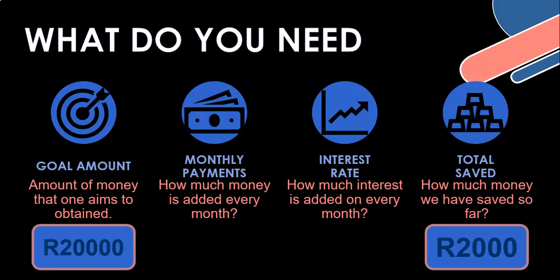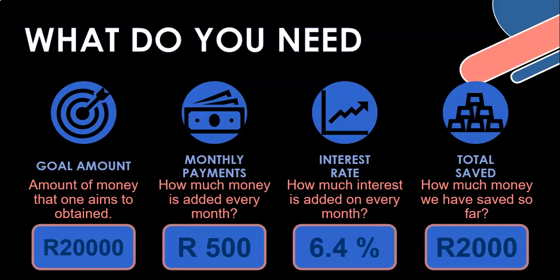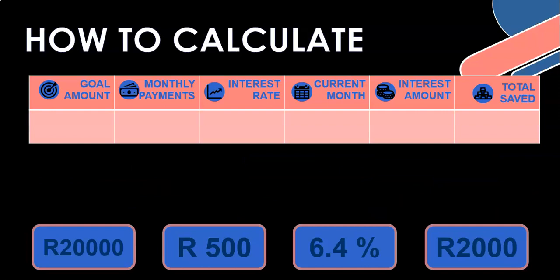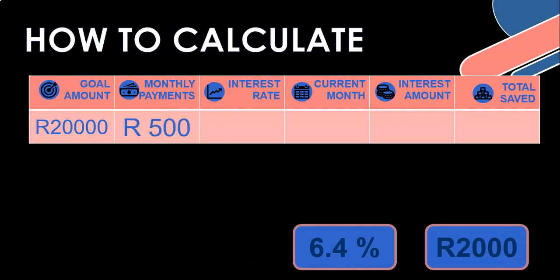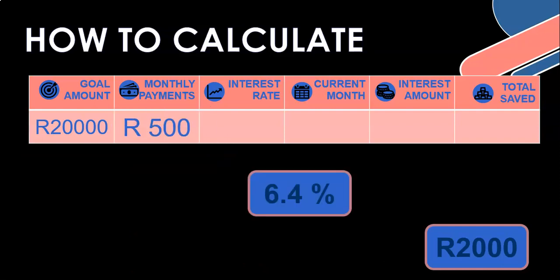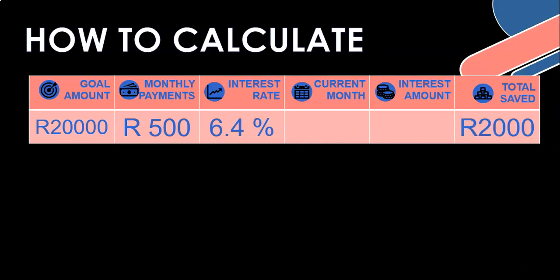Let's say our starting amount is 2,000 Rand. Our goal is to get to 20,000, and we are able to put 500 Rand in every month. The bank is giving us a 6.4% interest rate every month - that's a ridiculous interest rate, way too high, but for this scenario let's just use that. So we're going to keep track of these values: goal amount, 500 Rand monthly payments, interest rate, and total saved.